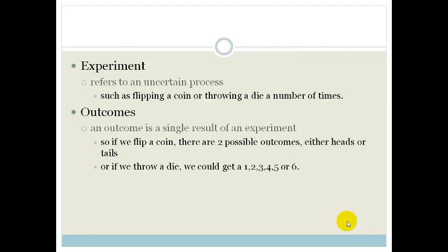Or if we throw a dice or a die, we could get 1, 2, 3, 4, 5 or 6. So those are our outcomes. An outcome is a single result of an experiment.